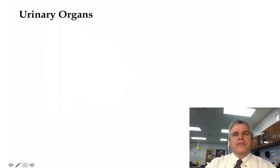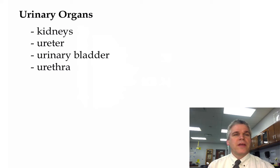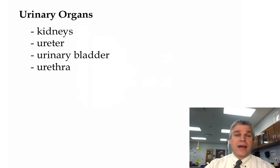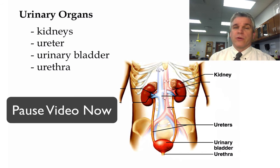Now, the one nice thing about the urinary system is that there's not a whole lot of organs associated with it. We just have these four: the kidneys, that we'll spend most of our time on; the ureter, which is simply a tube that takes urine from the kidneys to the urinary bladder, which simply stores the urine; and then finally, another tube, the urethra, in which that urine will be discharged out of the body. You may need to pause the video and label your diagram of the urinary organs.